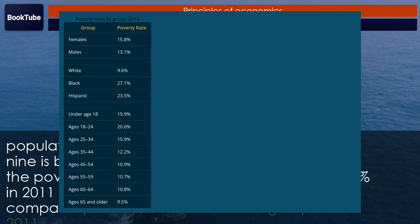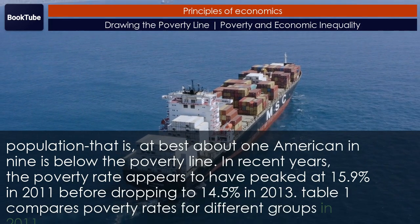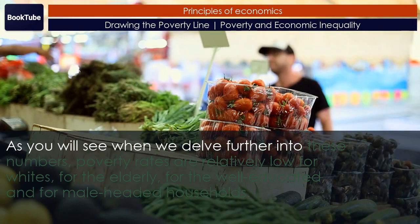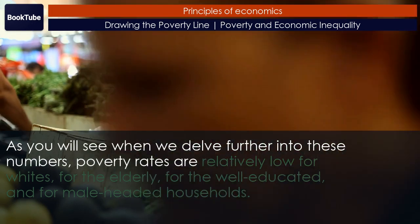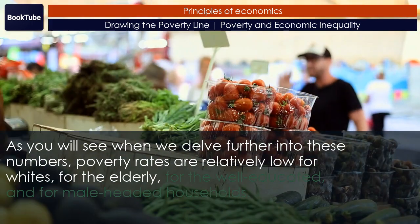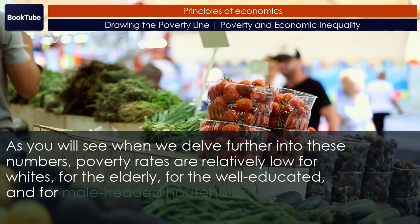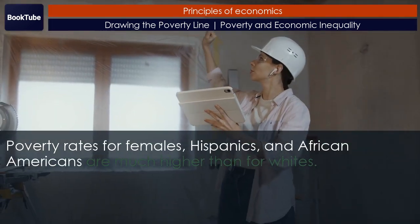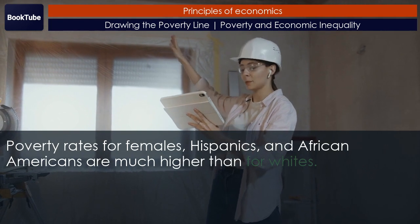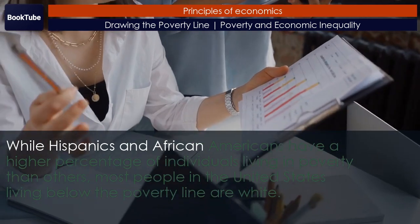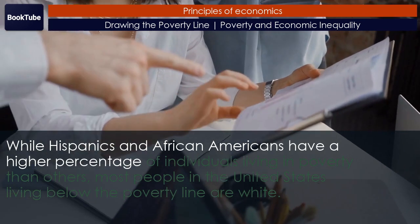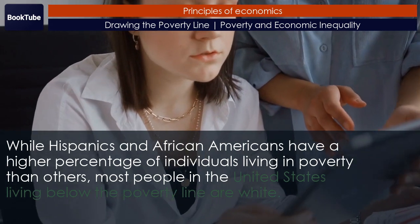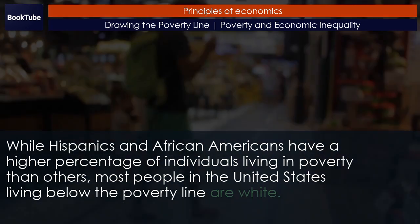Table 1 compares poverty rates for different groups in 2011. Poverty rates are relatively low for whites, for the elderly, for the well-educated, and for male-headed households. Poverty rates for females, Hispanics, and African Americans are much higher than for whites. While Hispanics and African Americans have a higher percentage of individuals living in poverty than others, most people in the United States living below the poverty line are white.